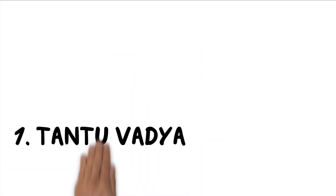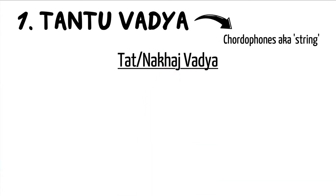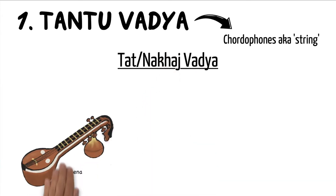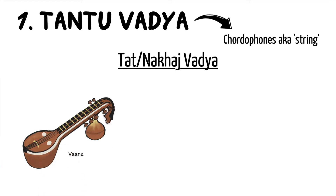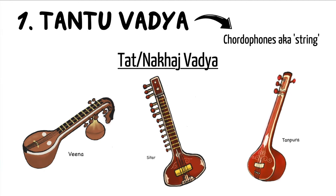Our first category is tantuvadya, also known as chordophones. These consist of string instruments. We can have string instruments that are played by plucking — these are known as the tat or nakkaj vadya. These include veena, sitar, and tanpura.